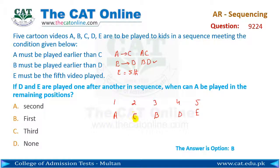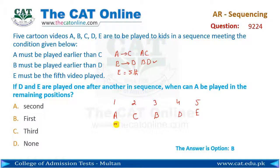Toh question hai: when can A be played in the remaining position? A kahin bhi aa sakta hai — aap dekhein ke first position ke ilawa kahin nahi aa sakta. Is liye is question ka answer hai option B.